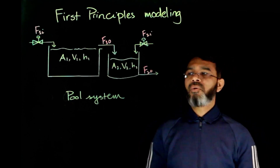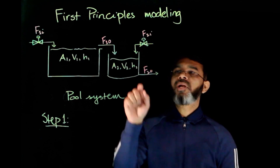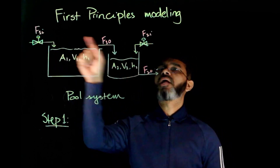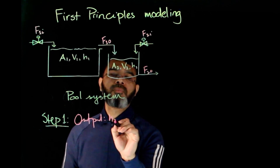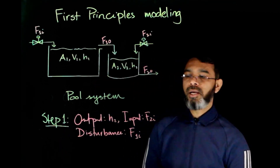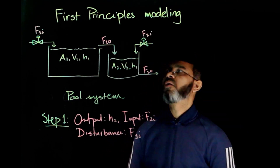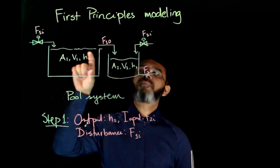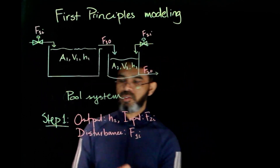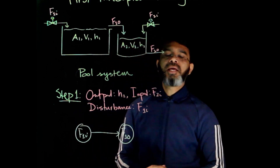Following the five-step procedure, step one is to define the modeling objective: find the model between H2 and F1I and F2I. The output is H2, the input is F2I, and the disturbance variable is F1I. We want to find whether there is a relation between F1I and H2. From process knowledge, if F1I changes, F1O will also change because the outlet flow from the first pool is due to overflow.